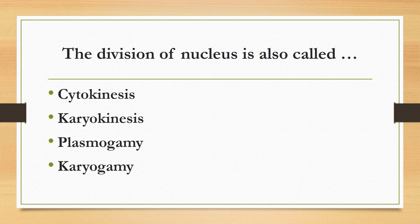The division of the nucleus is also called: cytokinesis, karyokinesis, plasmagamy, or karyogamy? The correct answer is karyokinesis. Karyokinesis means division of the nucleus. Cytokinesis means division of cytoplasm. Plasmagamy means fusion of protoplasm. Karyogamy means fusion of nucleus.